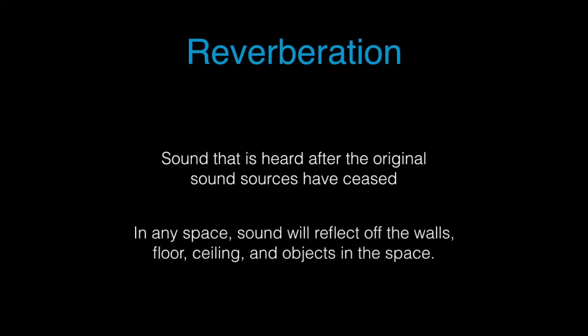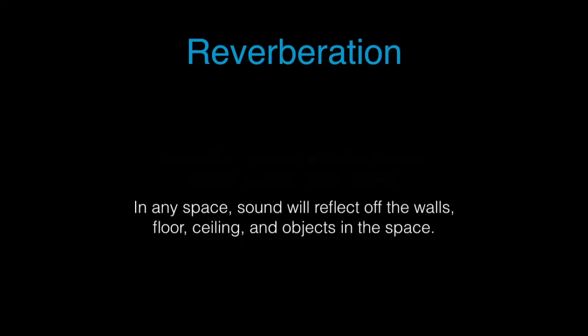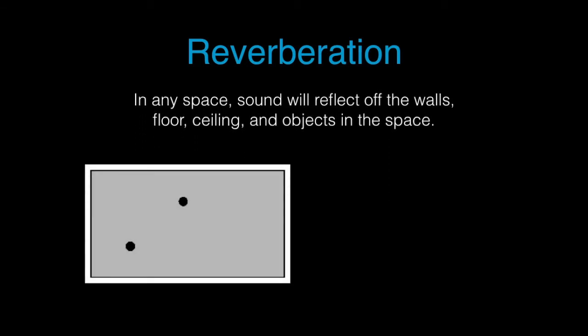What's happening is the initial sound is reflecting off the walls, floor, ceilings, and all of the objects. So, let's consider the dot at the top to be something that's producing sound, and the dot at the left bottom here to be a listener.